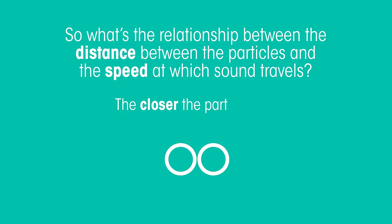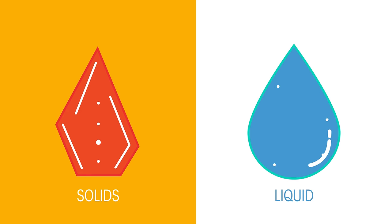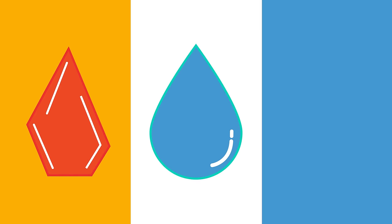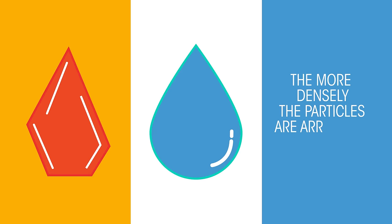The closer the particles lie, the faster sound is able to travel. Sound waves travel faster through solids and liquids because their particles are closer together. So it's easier for the vibration to hit the next particle. Another way of saying this is the more densely the particles are arranged, the faster sound travels.